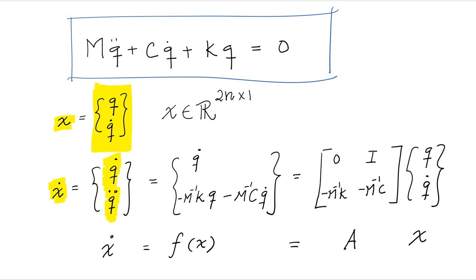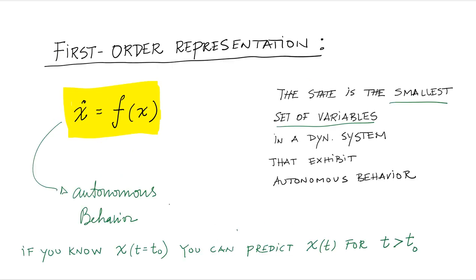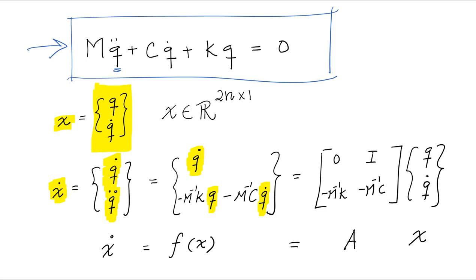Q dot, it simply could be equal to itself and Q double dot, if you solve from this equation right here, you can solve for Q double dot. So Q double dot is minus M to the minus one K Q minus M to the minus one C Q dot. By definition, that's an autonomous behavior because if we know Q and Q dot, we can write X dot equals a function of X, which is what we have right here. X dot is a function of X.